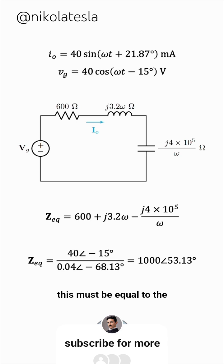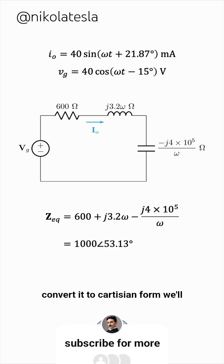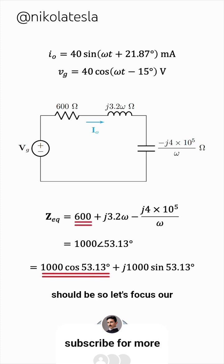This must be equal to the above expression for z-equivalent. Let's convert it to Cartesian form. We'll have 1000 cosine the angle, plus j 1000 sine the angle. The real part is 600, as it should be.